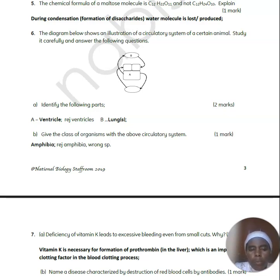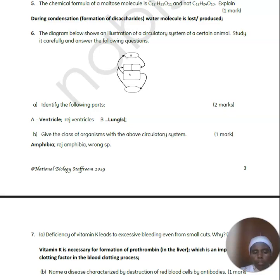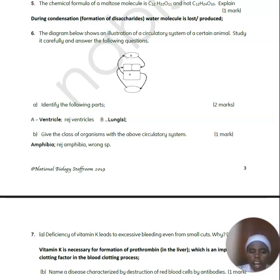The diagram below shows an illustration of the circulatory system of a certain animal with a three-chambered heart. You are supposed to identify A and B. A is the ventricle and B is the lungs; the other structure labelled is the atrium. This circulatory system is found in class Amphibia.